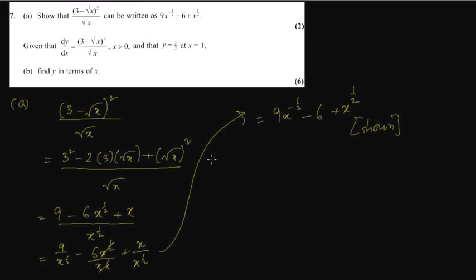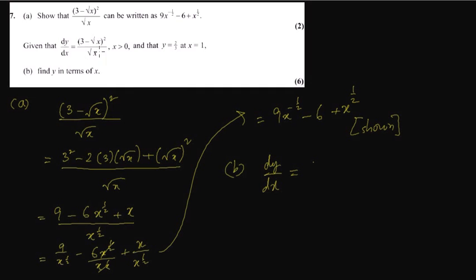Now question number B is integration. Whenever we have dy/dx and we need to find y, this is integration. In every C1 exam there will be a question like that. So we have dy/dx equals 2. Now instead of the original expression, we can easily write what we just showed, because this sum is connected.